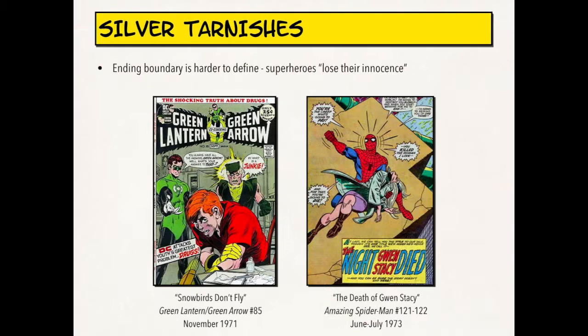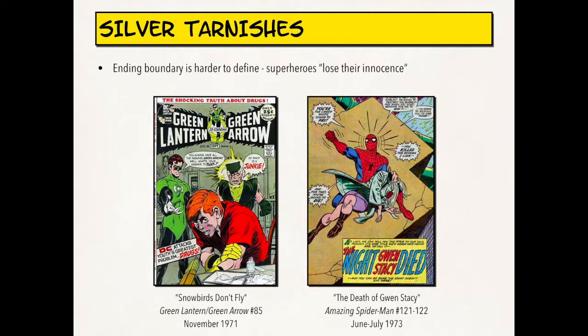The Silver Age seems pretty short in comparison to the Golden Age. The ending boundary is a little harder to define, but is generally marked by the moment in which superheroes lose their innocence, and is generally considered to happen in the early 1970s. There's a story from DC called Snowbirds Don't Fly, in which a character discovers that his ward is a junkie — showing that DC heroes are now facing real-world problems. On the Marvel side, we have the death of Gwen Stacy in 1973, which brings a lot of seriousness back to superhero stories and changes the nature of Peter's mission and character. This leads into what we call the Bronze Age, an era in which the gritty superhero is born.